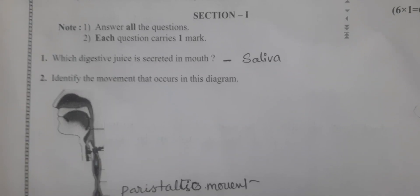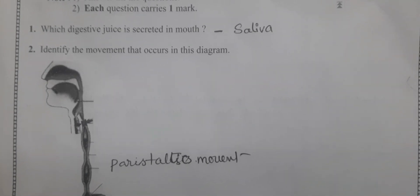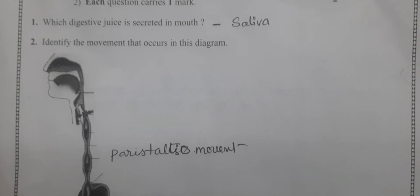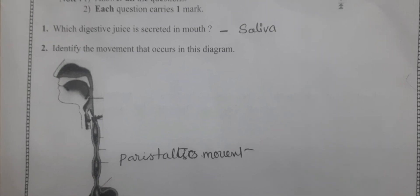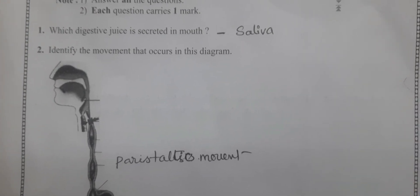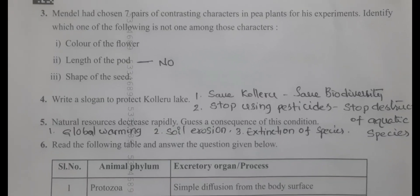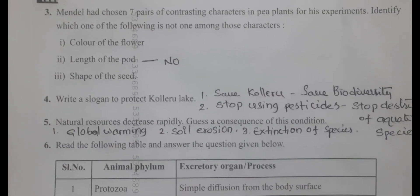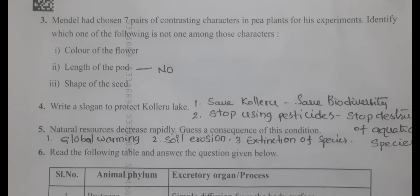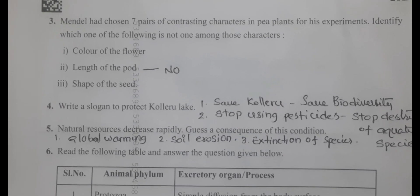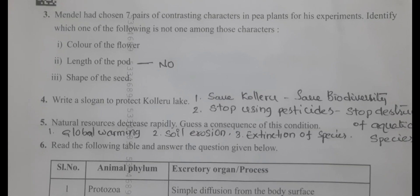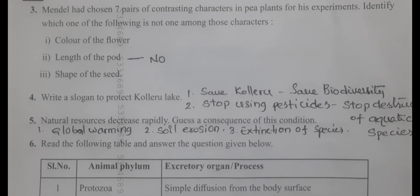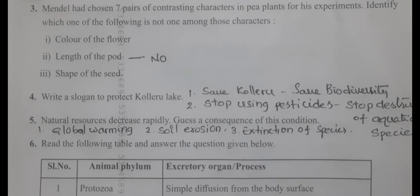In Section 2, identify the movement that occurs in this diagram. This is a familiar diagram — the answer is peristaltic movement. Third question: Mendel had chosen seven contrasting characters in pea plants for his experiments. Identify which of the following is not one among those characters.